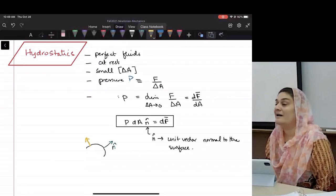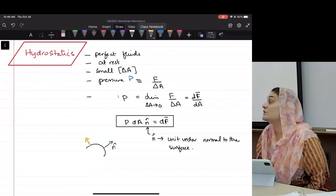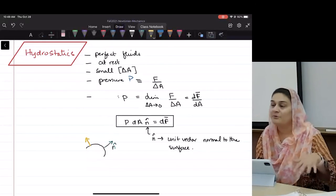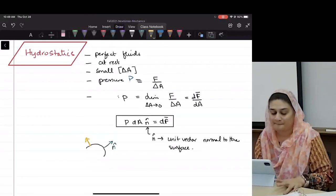This is why I'm not writing i hat, j hat, and k hat, because I don't know how our surfaces are going to change. I'm just going to call it n, and then we get to pick which n we're talking about.